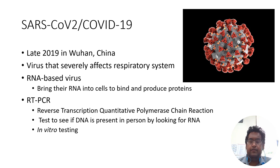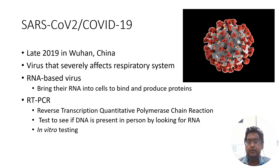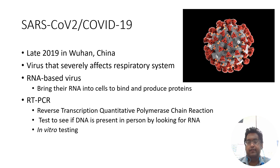One of the main tests to see if you have COVID-19 is through RT-PCR testing, or reverse transcription quantitative polymerase chain reaction. What these tests do is take the RNA that the virus is based on and go in reverse to figure out the DNA of that virus to see if it is present in the individual. This is an in vitro test, which means it happens in a laboratory setting, outside of the body.